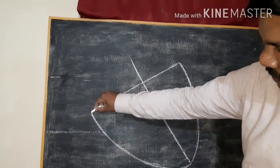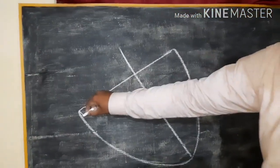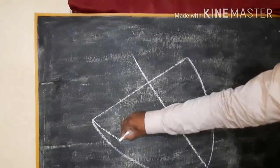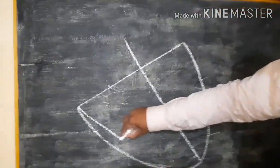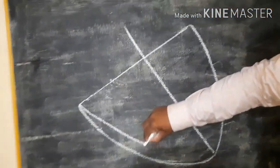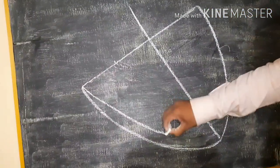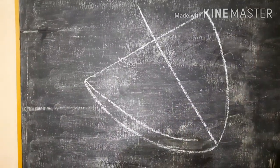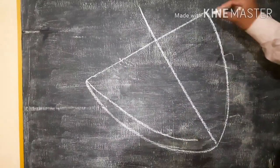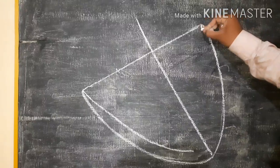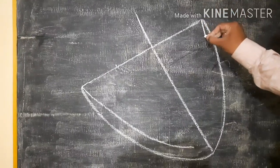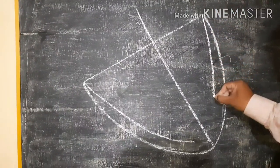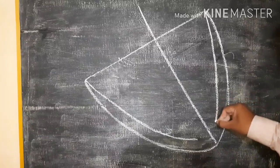From here, we have to draw a curve by increasing the thickness, like this — by increasing the thickness up to here. And from here, you have to draw a curve by increasing the thickness like this, up to here.